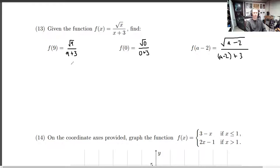So here's the first one, f of 9. This evaluates to the square root of 9, which is 3, divided by 9 plus 3. 9 plus 3 is 12. So this is equal to 1 over 4.